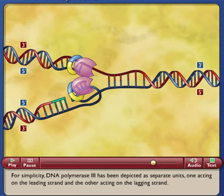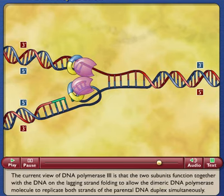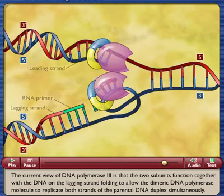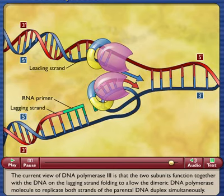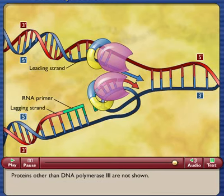For simplicity, DNA polymerase 3 has been depicted as separate units, one acting on the leading strand and the other acting on the lagging strand. The current view of DNA polymerase 3 is that the two subunits function together with the DNA on the lagging strand, folding to allow the dimeric DNA polymerase molecule to replicate both strands of the parental DNA duplex simultaneously. Proteins other than DNA polymerase 3 are not shown.